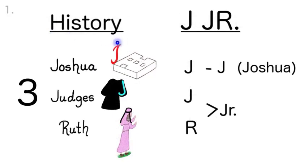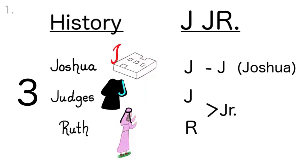The first history group in Section 1 has the initials JJR for Joshua Jr., because Joshua was the next leader after Moses. It goes together like this: 3 J Jr., Joshua, Judges, Ruth.